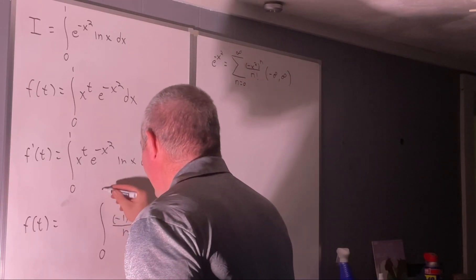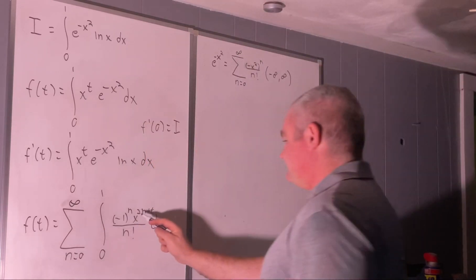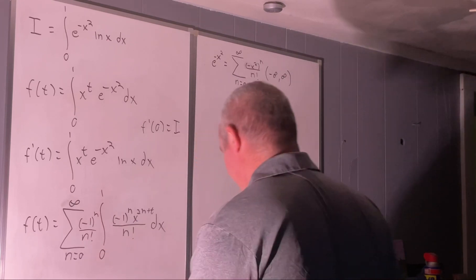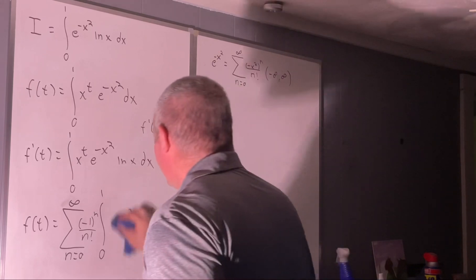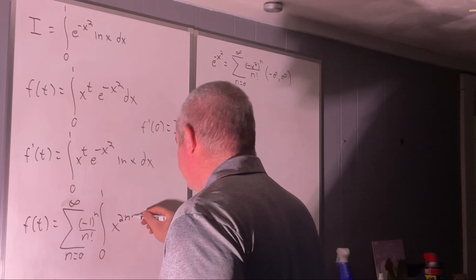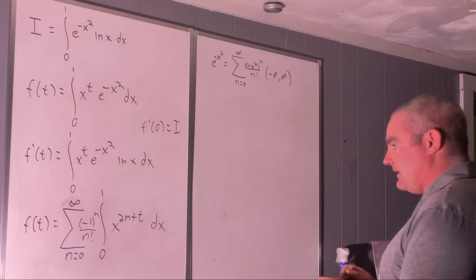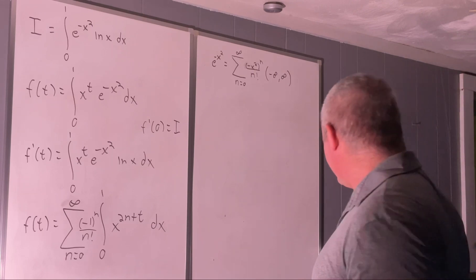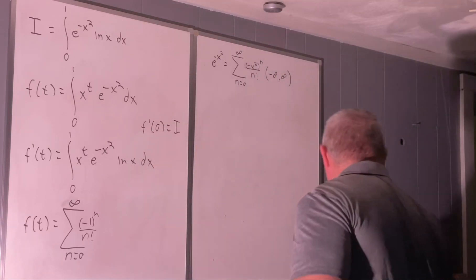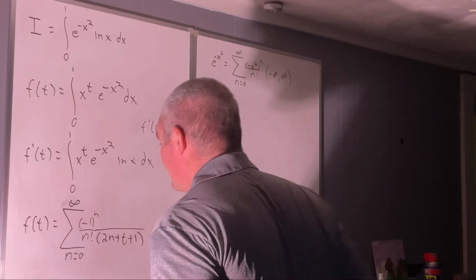So that's going to be the integral from 0 to 1, and we'll have our sum notation on the outside. All right. We can bring out our negative 1 to the n over n factorial. Integrating x to the 2n plus t from 0 to 1 dx is just going to give us 1 over 2n plus t plus 1. Okay. Great.